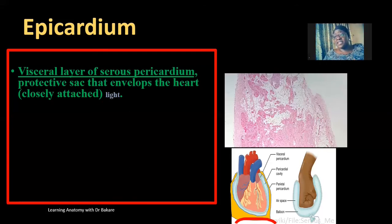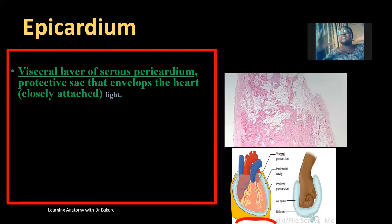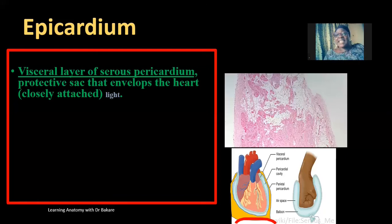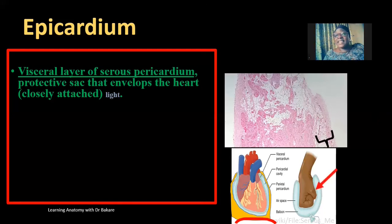The pericardium is a double-layered sac that encloses the surface of the heart. The specific region closely related to the heart is the visceral layer of the serous pericardium, and this layer is closely attached to the heart — this is also the epicardium of the heart.